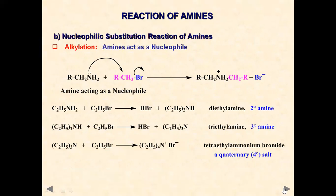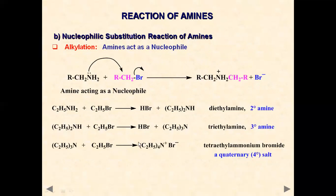Amines also react via nucleophilic substitution. When an alkylamine reacts with an alkyl halide, we get a substituted alkylamine or an ammonium salt. For example, ethylamine reacts with ethyl bromide to give diethylamine; this reacts further with ethyl bromide to give triethylamine; triethylamine reacts further to give tetraethylammonium bromide. This shows that amines generally undergo nucleophilic substitution reactions.